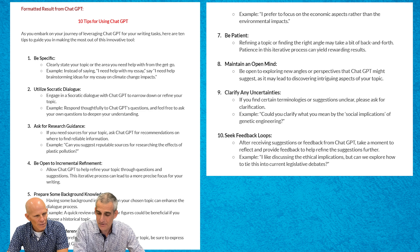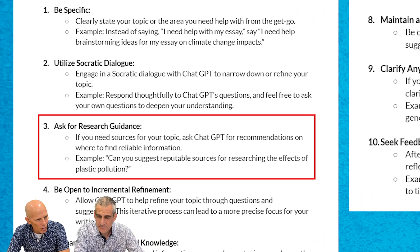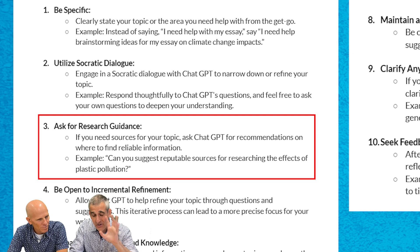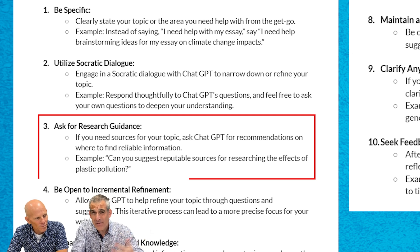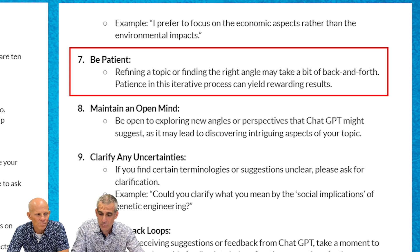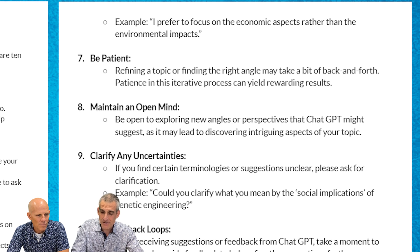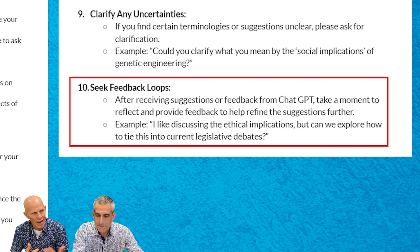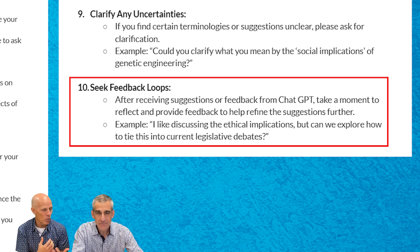Any favorites? I love 'Ask for research guidance' — if you need sources for your topic, ask ChatGPT for recommendations on where to find information. A caveat: you want to make sure you're using ChatGPT-4 or something with internet access, and always verify that sources are real. Another tip I really enjoy is to be patient. People are used to getting things instantaneously on their phones, but we need to slow down and work with the bot. We also want to think about feedback loops — the significance of having that feedback loop to actually reflect and think. That's what we've been saying repeatedly in these videos.